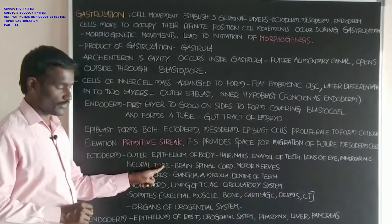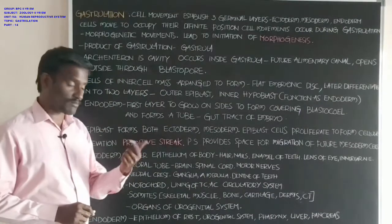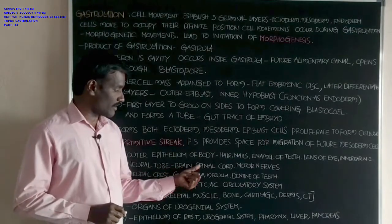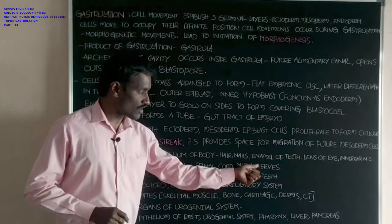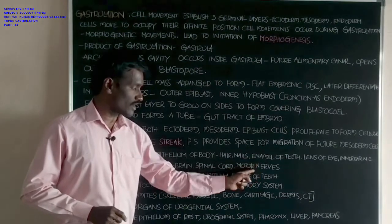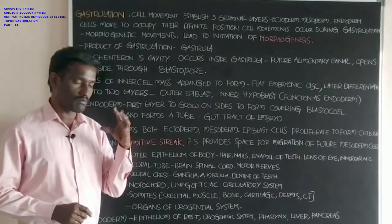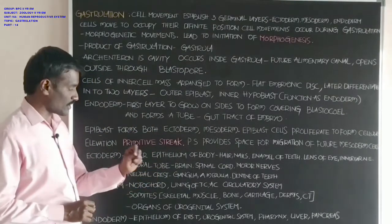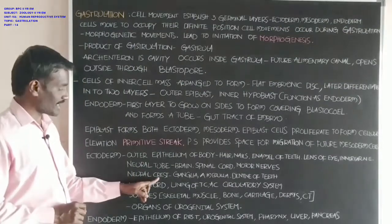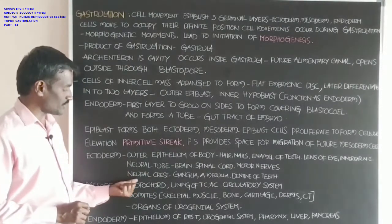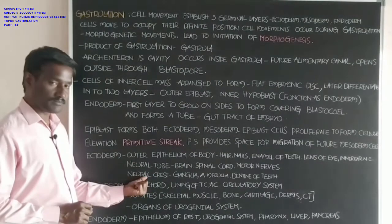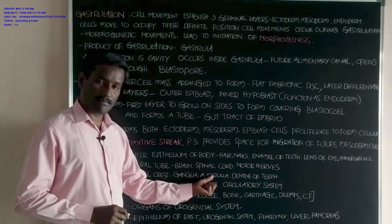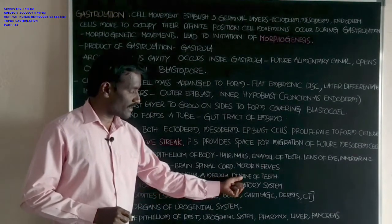The neural tube is also formed from the ectoderm. The neural tube gives rise to the brain, spinal cord, and motor nerves — all produced from the ectoderm by the formation of the neural tube. The ectoderm also produces the neural crest, which gives ganglia, adrenal medulla, and dentin of teeth.